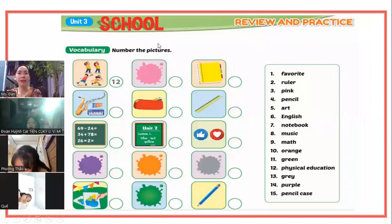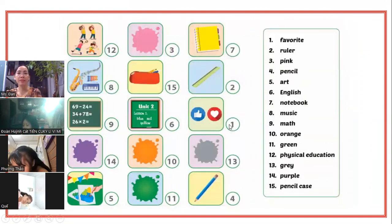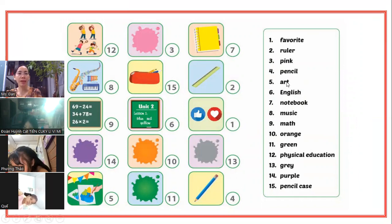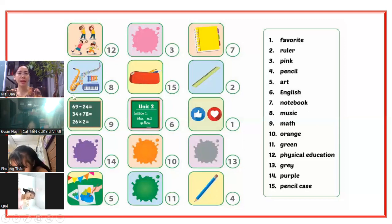Chúng ta qua bài tập tiếp theo: Number the picture - viết số vào. Số 1: Favorite. Số 2: Ruler - cây thước kẻ. Số 3: Pink - màu hồng. Số 4: Pencil - cây bút chì. Số 5: Art - môn vẽ. Số 6: English - môn tiếng Anh. Số 7: Notebook - quyển tập. Số 8: Music - âm nhạc.